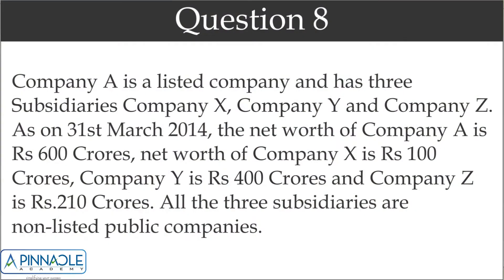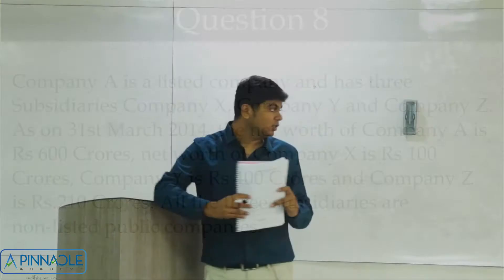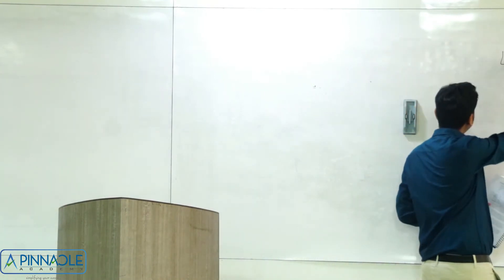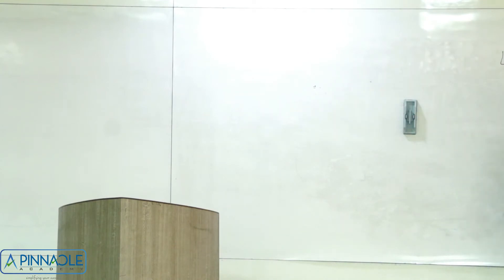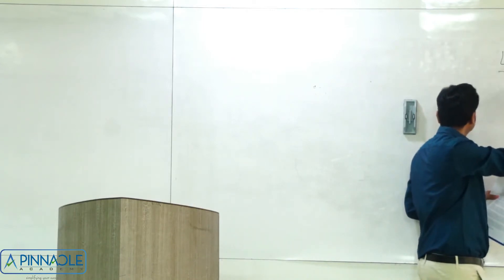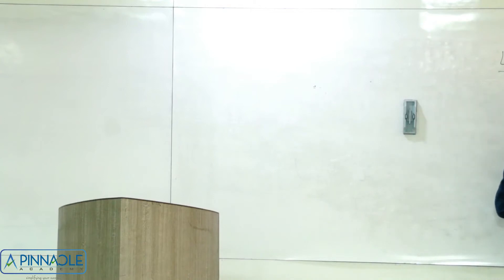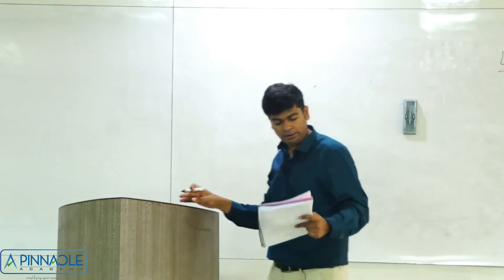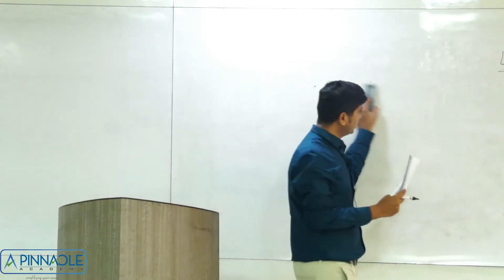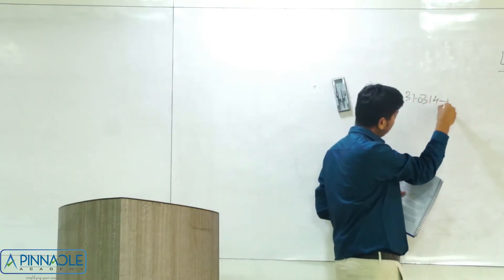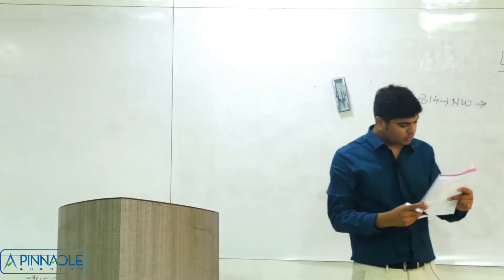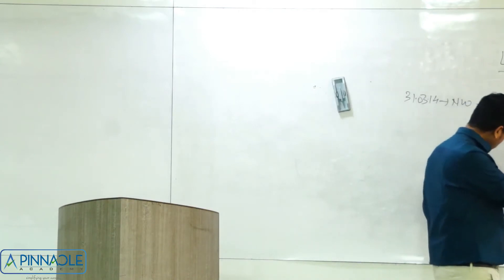Question 8: Company A is a listed company with 3 subsidiaries — Company X, Company Y, and Company Z. As on 31st March 2014, net worth of A is 600 crores, X is 100 crores, Y is 400 crores, and Z is 210 crores. All 3 subsidiaries are unlisted. Company A is the main listed company while X, Y, and Z are unlisted subsidiaries.